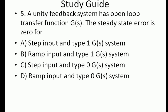A unity feedback system has open-loop transfer function G(s). The steady-state error is 0 for which of the following? Options: step input with type 1 system; ramp input with type 1 system; step input with type 0 system; ramp input with type 0 system. You can approach this using a shortcut chart, but I advise you to remember both the shortcut and the derivation. Let me first write the shortcut.